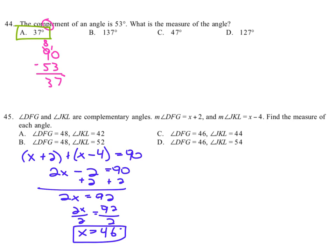because they want to know what the angles measure. So the measure of angle DFG equals X plus 2, which is 46 plus 2, or 48 degrees. So DFG measures 48 degrees. A and B have that answer.